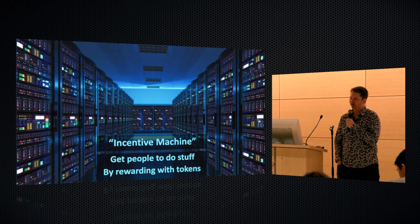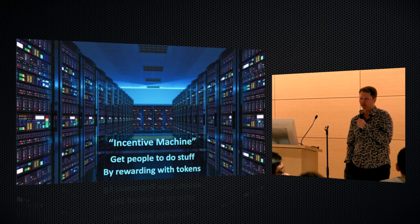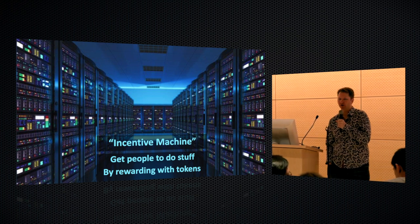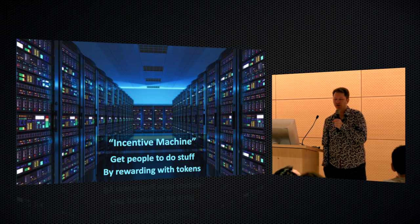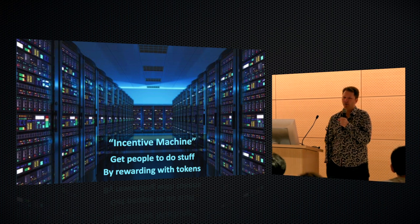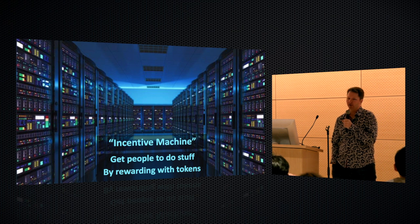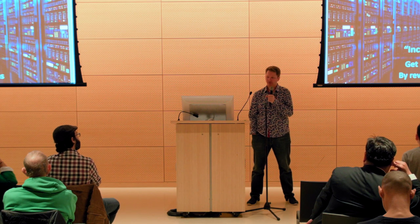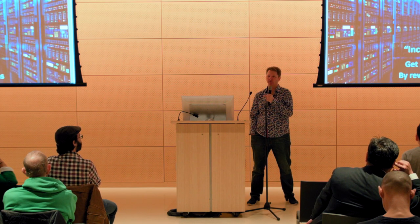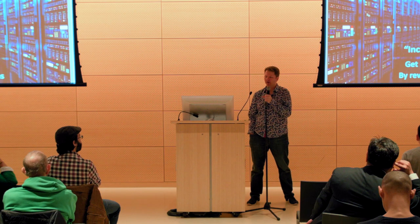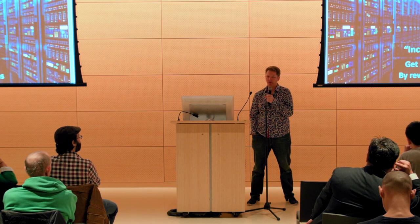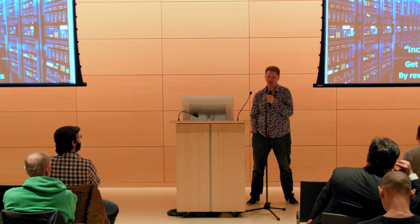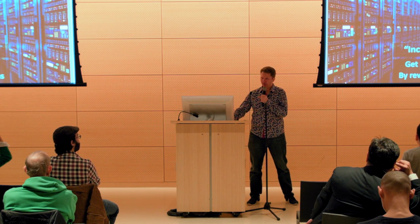In the world of blockchains, there's a whole bunch of different labels — everything from trust machines to generalized utility networks. One of the really powerful ones is calling them incentive machines. What this means is you can get people to do stuff by rewarding them with tokens. You can structure behavior, you can structure incentives via design. This is a pretty radical, powerful thing, and it was really with blockchains that we had this new tool to do this in a next-generation way.